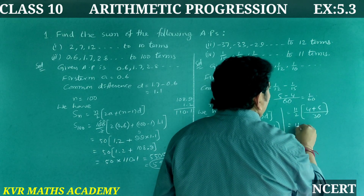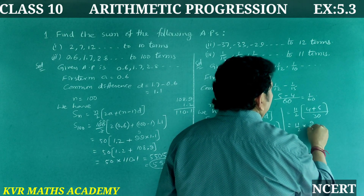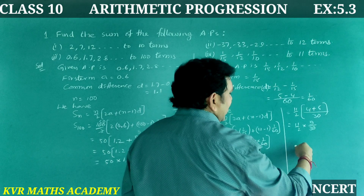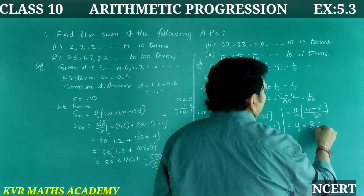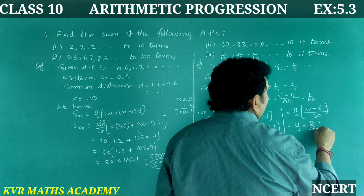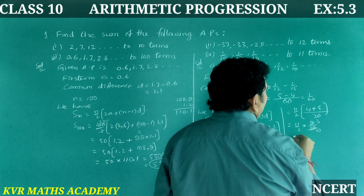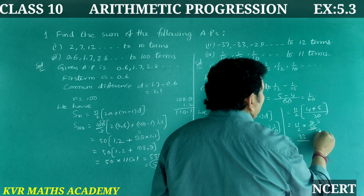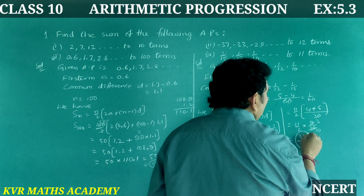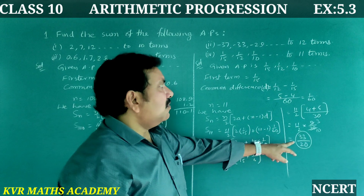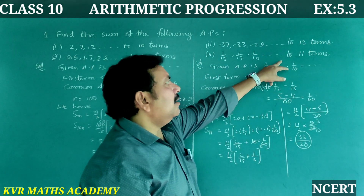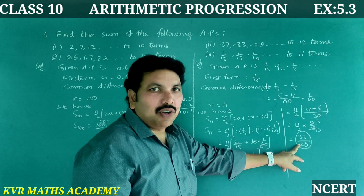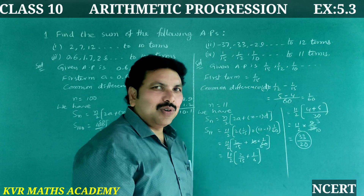Simplifying: 2/15 + 1/6 with LCM 30 = 4/30 + 5/30 = 9/30 = 3/10. So S₁₁ = 11/2 × 3/10 = 33/20. The sum of the first 11 terms of the given AP is 33/20.